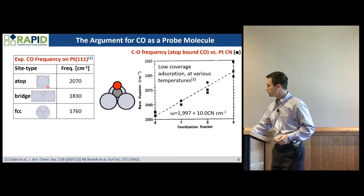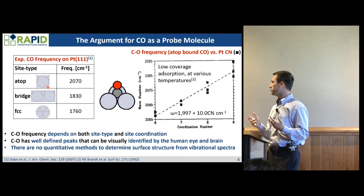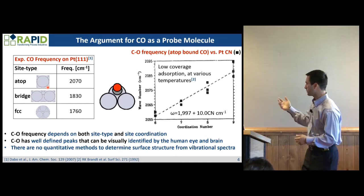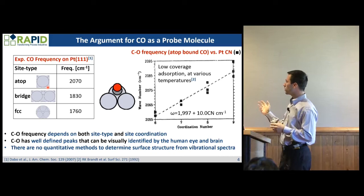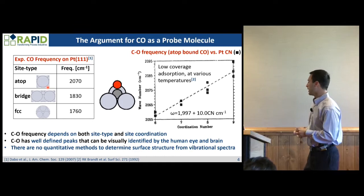CO frequency depends on both site type and site coordination, and it has well-defined peaks. Typically in experiment, they're just using a single frequency — well, there are actually six frequencies from CO, but they use just a single one because when you're trying to identify it by eye, which is what experimentalists do, it's easier to have something simple. Currently, there are no quantitative methods to determine surface structure using vibrational spectra; most of it is heuristic. The reason is because we also need intensities.